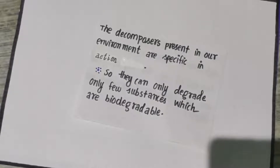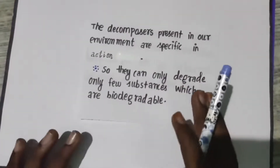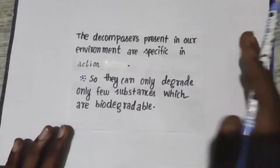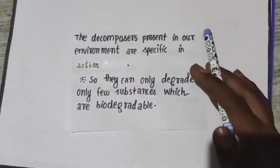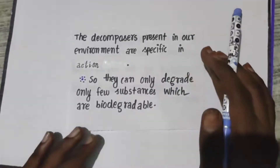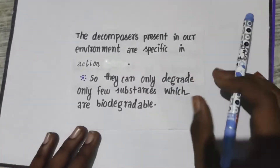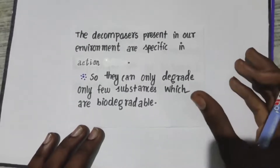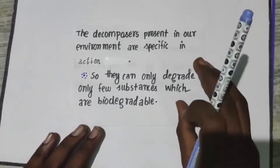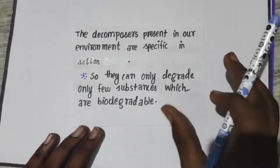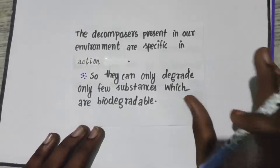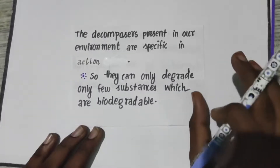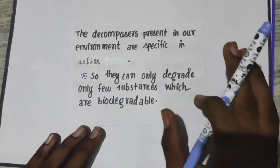So they can only break down a few substances in nature, similar to the enzyme which digests food in our stomach. One enzyme digests protein, another digests fat, another digests carbohydrate — each enzyme is specific. That is how decomposers work as well.